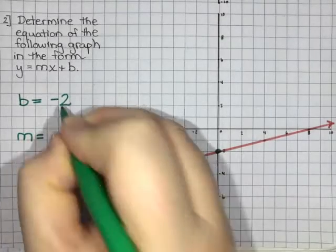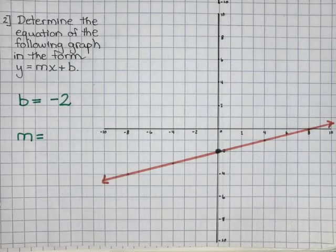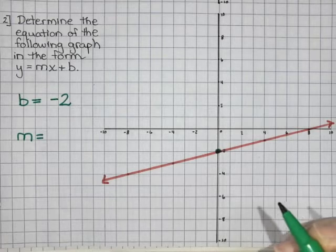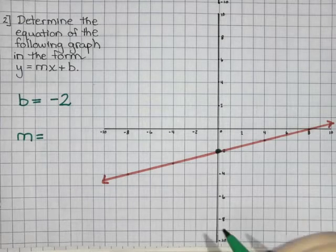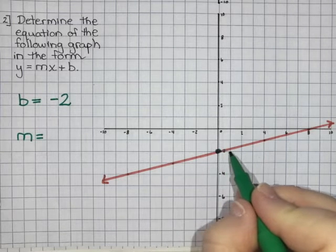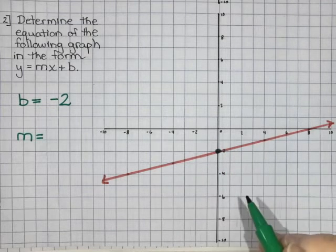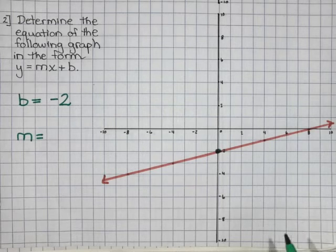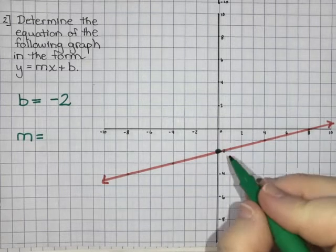To figure out the slope, the slope is the roadmap of how I get from one point to the next. What I'm going to do is find the next point on the line where it actually crosses the corner of some grid lines. If I follow my line, I don't like this point because it's in the middle of the square.